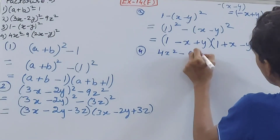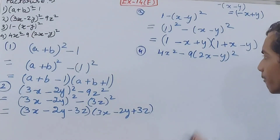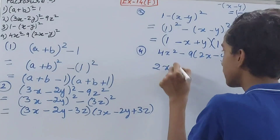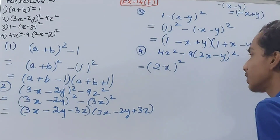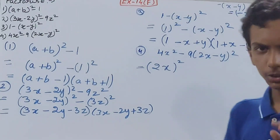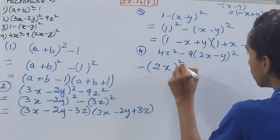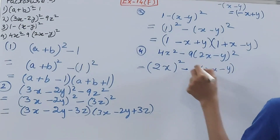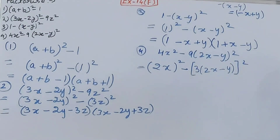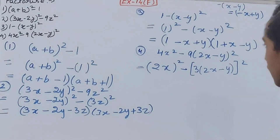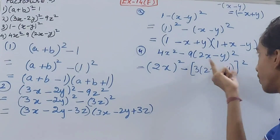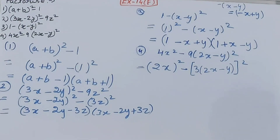The fourth question is 4x² - 9(2x - y)². The square root of 4x² is 2x, so 4x² = (2x)². For the second term, 9 is the square of 3 and (2x - y)² stays as it is, so it becomes (3(2x - y))². Do not open (2x - y)² here or the question will become wrong.